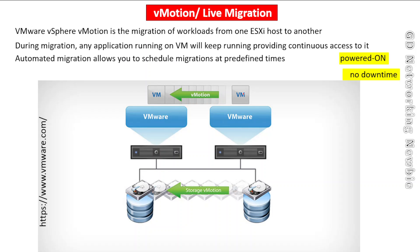Another characteristic of vMotion is that we can automate the migration procedure. Automated migration allows us to schedule migration at a predefined time, so we can define certain times and migration will occur automatically. To make this possible, there is a requirement that there must be a network connection between the source and target hosts.